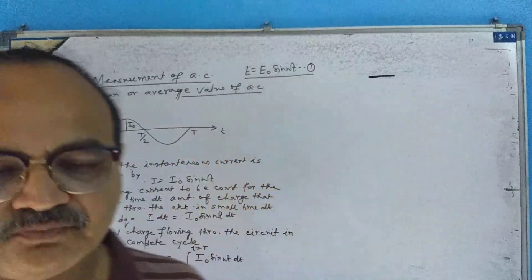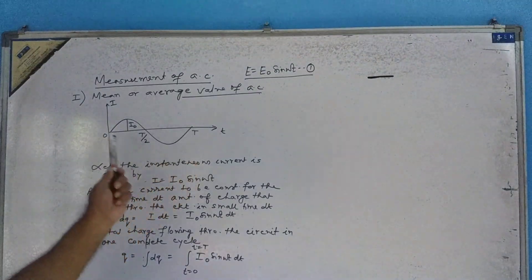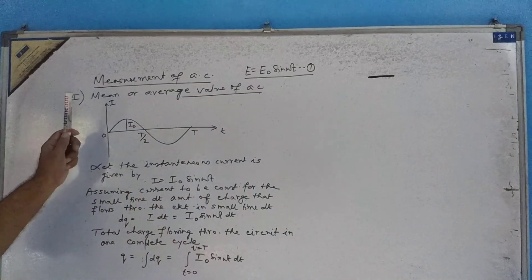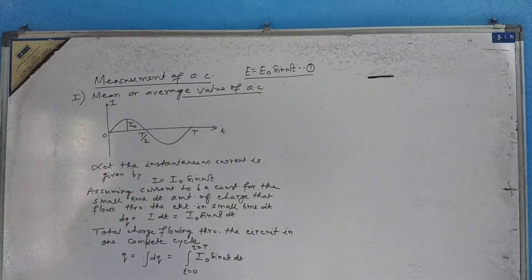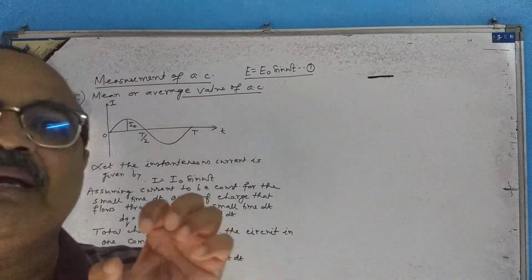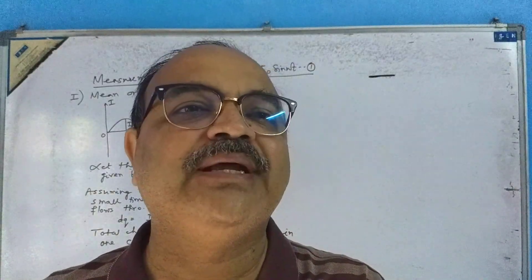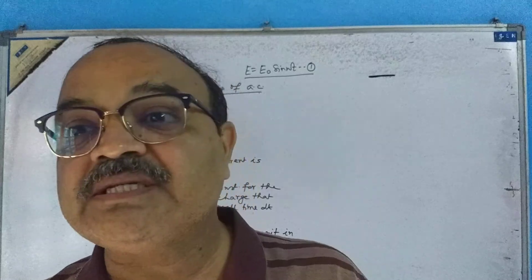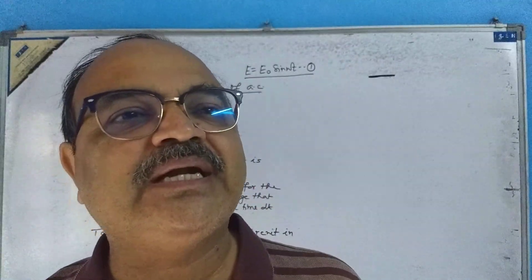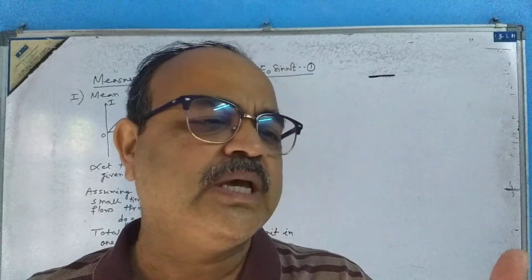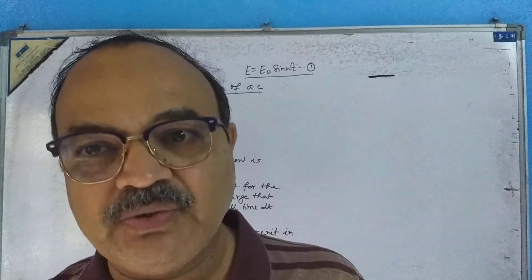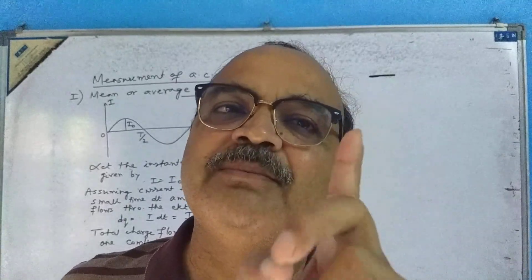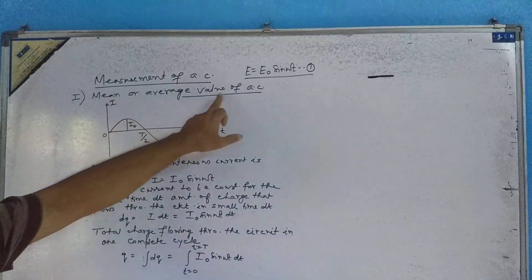Obviously AC is fluctuating — it is varying at every instant of time. If I draw a graph of I versus T, the nature of the graph will be as shown in the figure. This is why it is a big thing: how to calculate the value of AC. We have to see how to calculate AC. Suppose if I am asked what is the value of AC — obviously it is varying at every instant, so it becomes a problem. There are two different ways: number one, we can find out the mean or average value of AC.